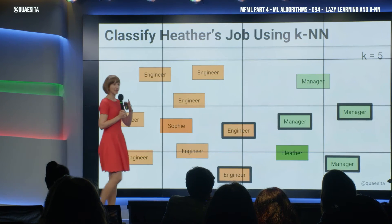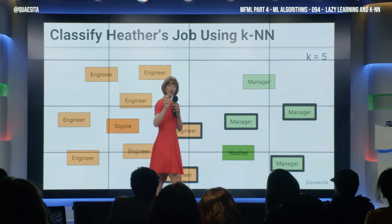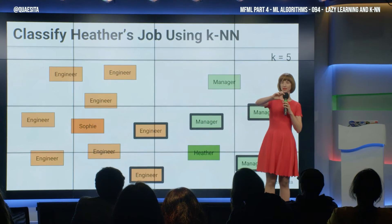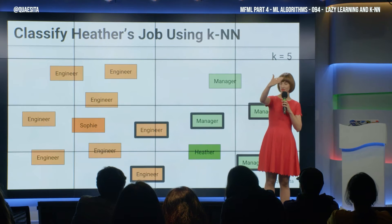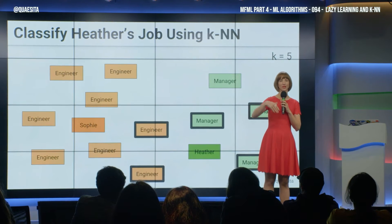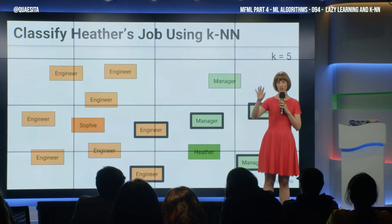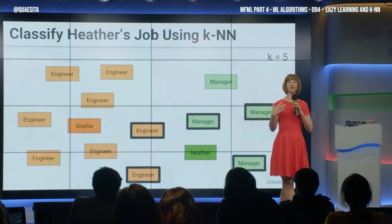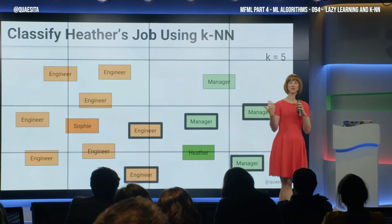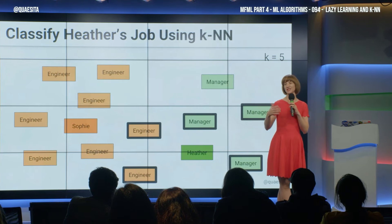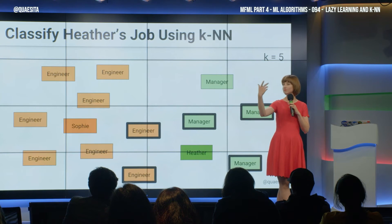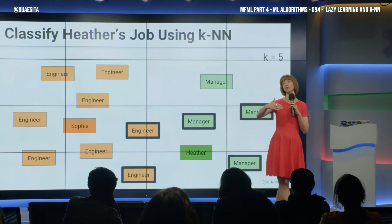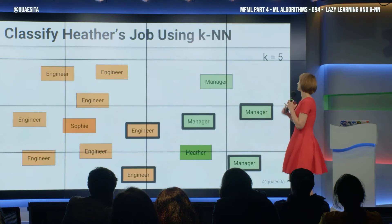Now, of course, K matters a hang of a lot, which is why you will want to do hyperparameter tuning. The way you can tune it is simply to start at one, go to two, go to three. Hyperparameter tuning is easy for this case. It gets hard when you've got lots of different hyperparameters to deal with, and it takes a long time to rerun your model — and now you can't just brute force find the right answer.